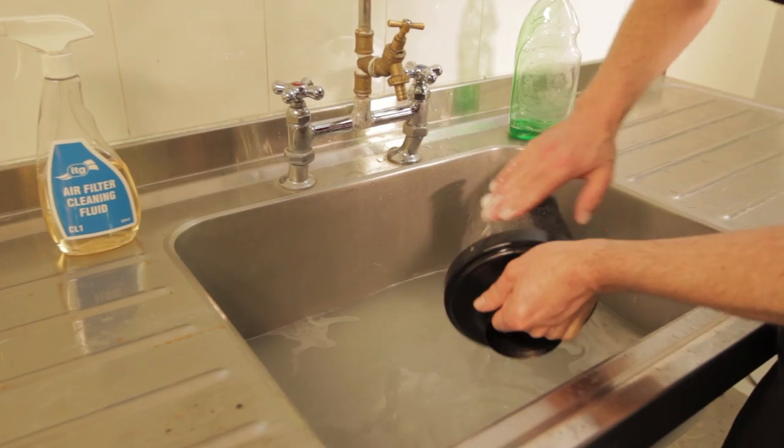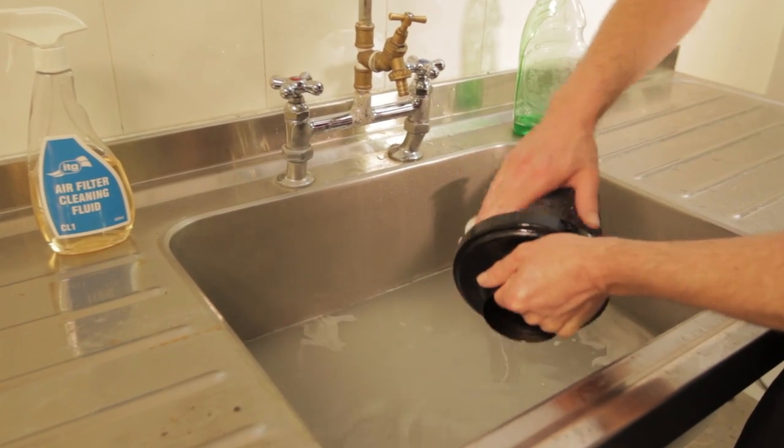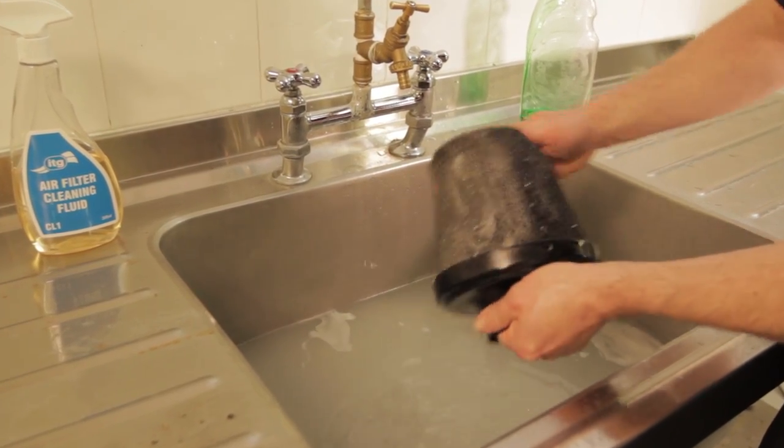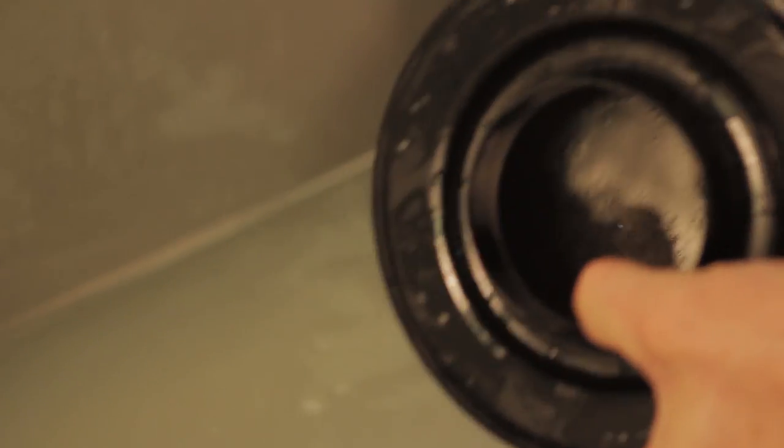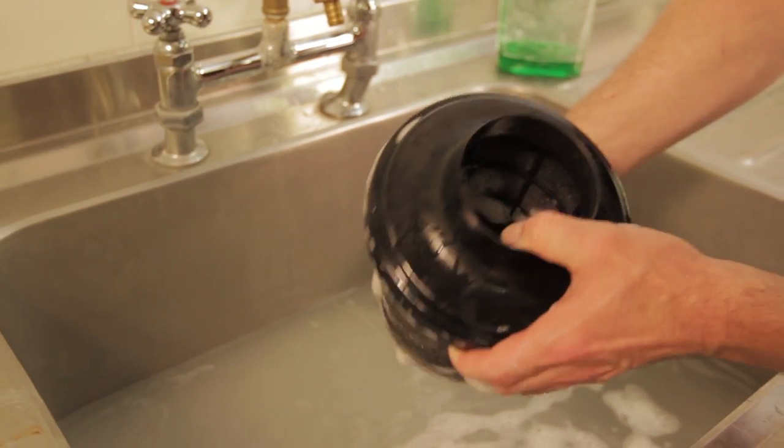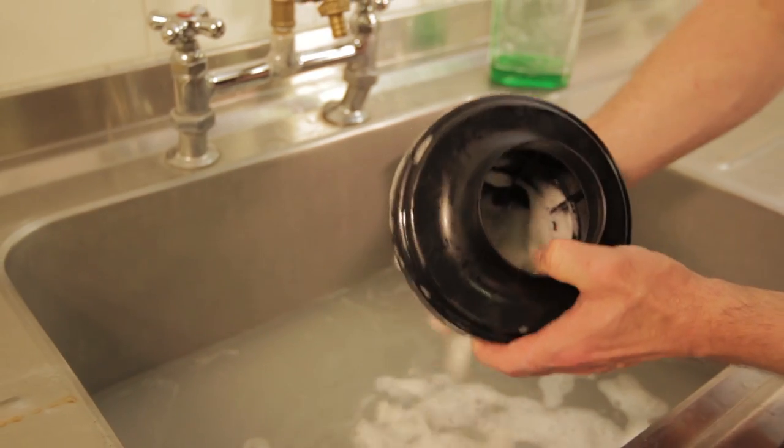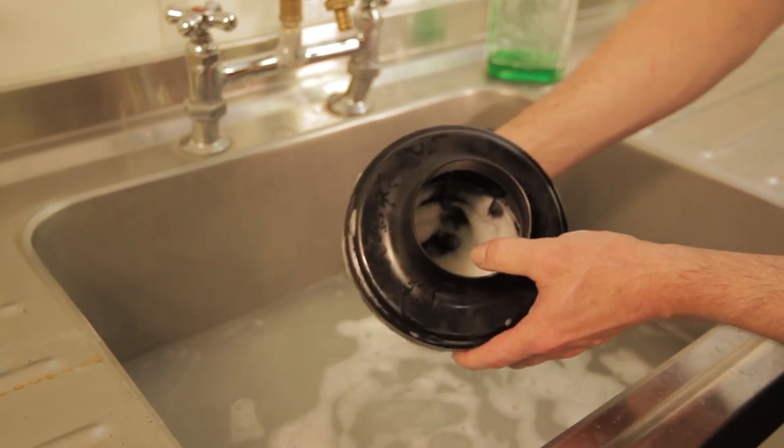Then massage this in and rub this in really deeply as well. The joy with the washing up liquid is you'll see it all starting to foam up through. You know when you've got full penetration through because it starts to foam up on the inside. Once you're sure that you've worked it all the way through, just thoroughly rinse it out in clean water.